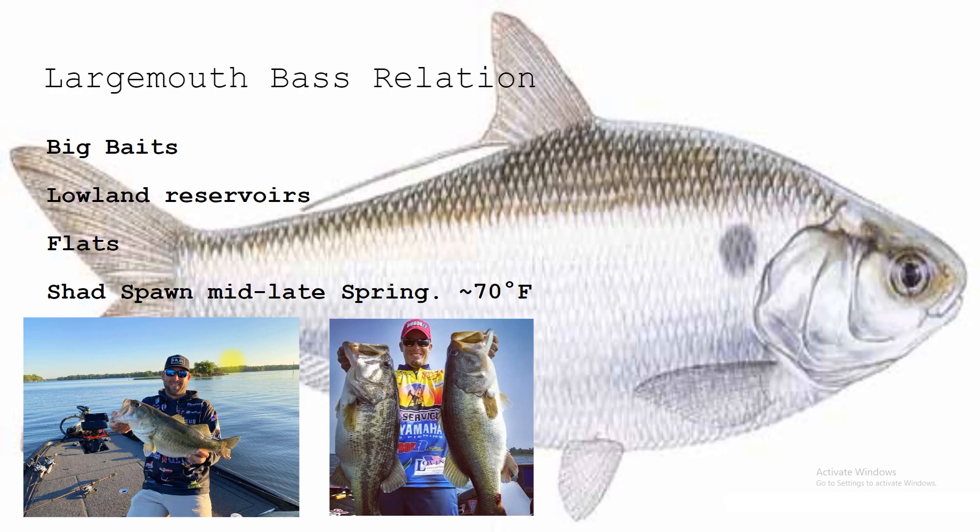They like lowland reservoirs and they like flats, so largemouth are going to be looking for them on those flats. Gizzard shad also like feeding on flats. They spawn around that 70-degree mark, kind of like threadfin, but their spawning ritual is not as easy to identify. Threadfin will be bumping up against any solid surface to lay their eggs on, while gizzard shad like to spawn in open water over things their eggs can stick to — a little different and harder to find. But they do shad spawn, something a predator can key on because shad are focused on spawning, not necessarily predator avoidance. So remember that 70-degree mark, and throw those big baits.